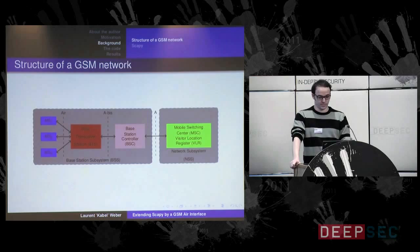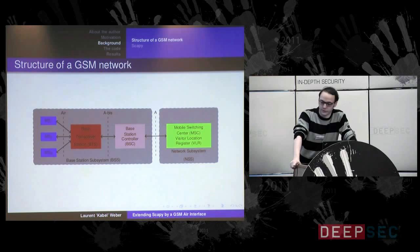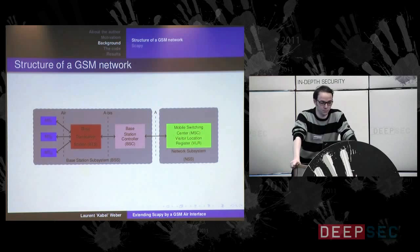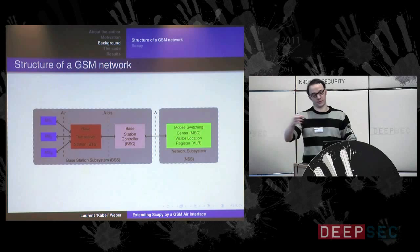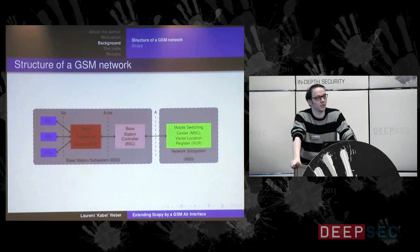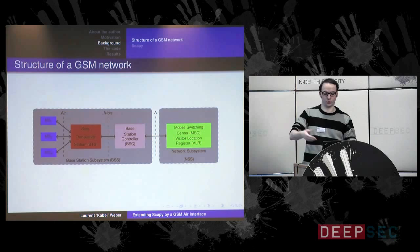Now we come to the background knowledge you need to understand. Here is a very coarse overview of a GSM network. On the left side the blue boxes are the mobile stations — basically your mobile phone or anything capable of speaking the GSM protocol. Those devices are linked to a base transceiver station over the air interface. The base transceiver station is connected over an A-bis interface to a base station controller, and finally an A interface connects that part to a mobile switching center or visitor location register.